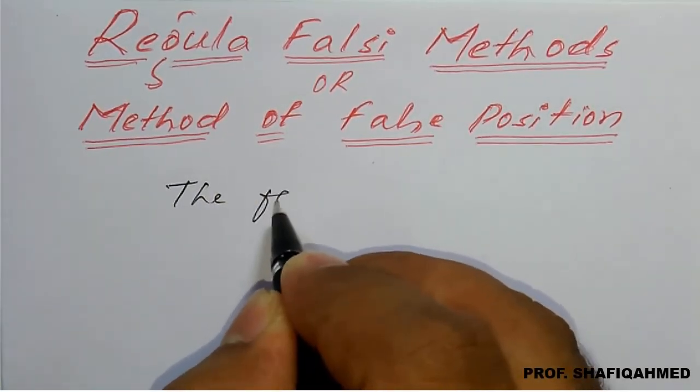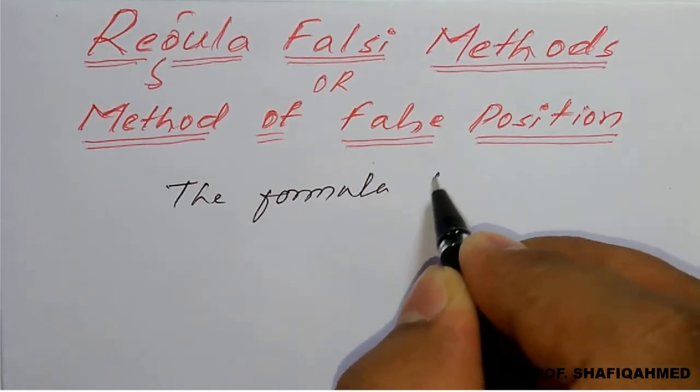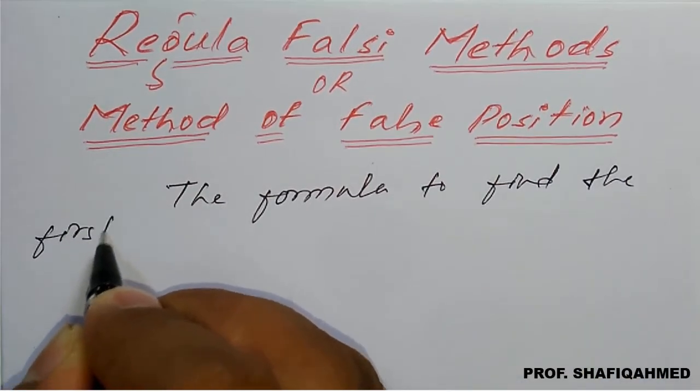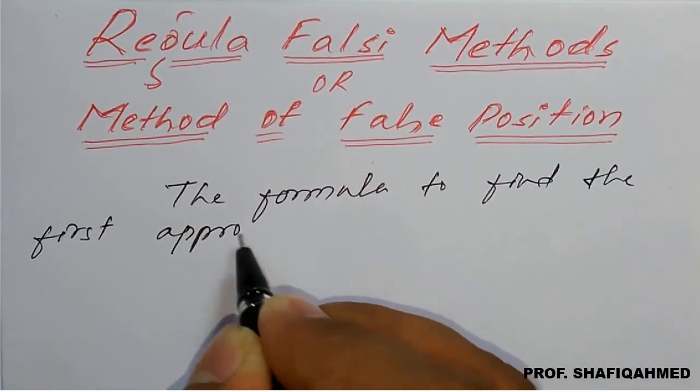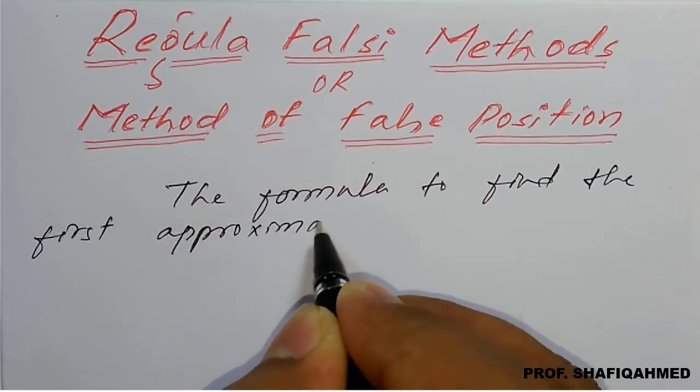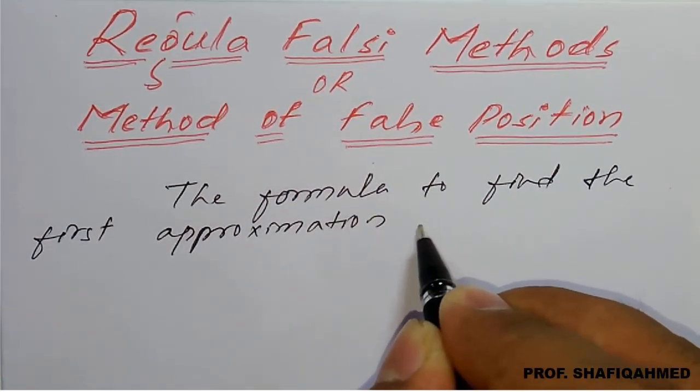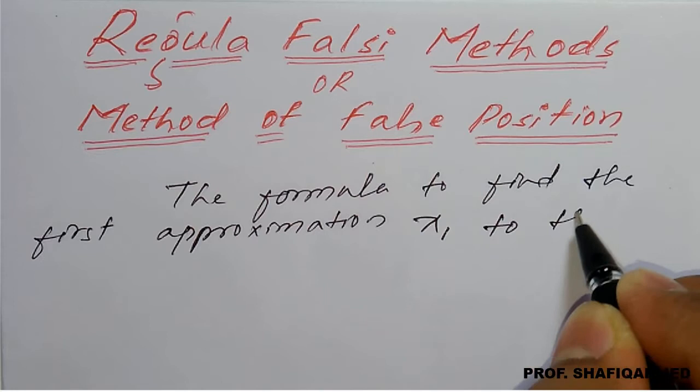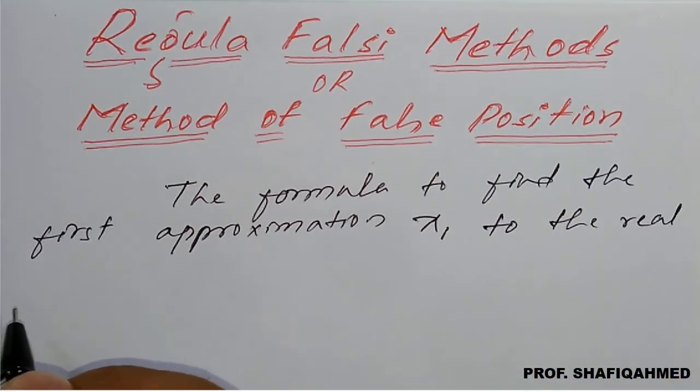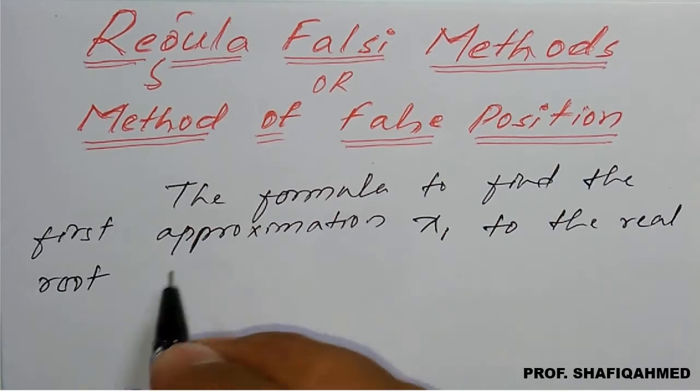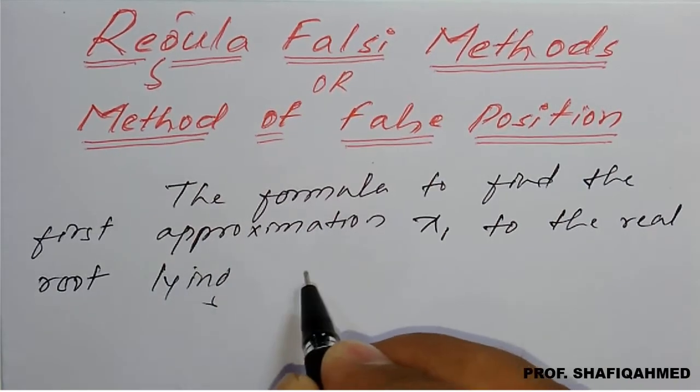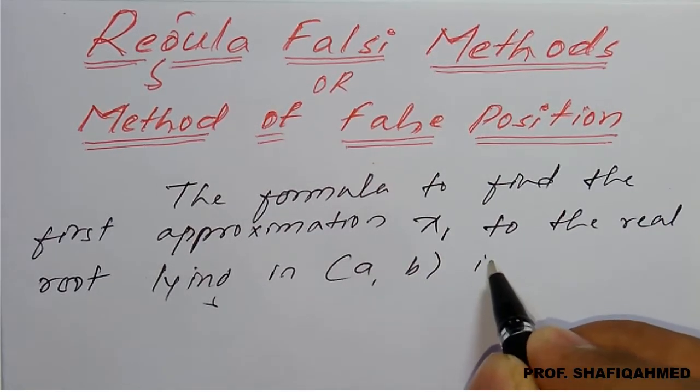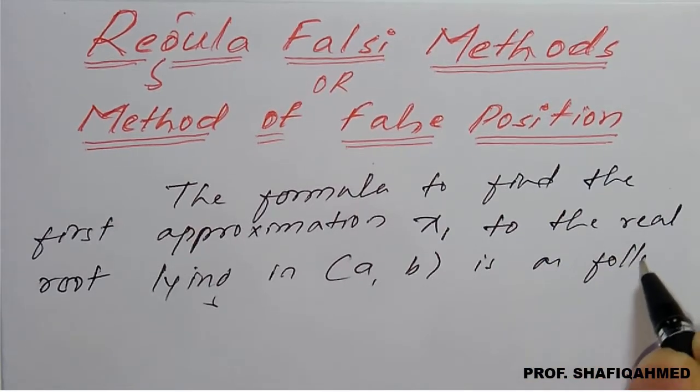We will consider the formula to find the first approximation. That is we call name it as x1. So the real root lying in for example a comma b is as follows.